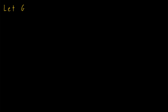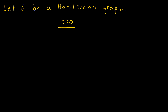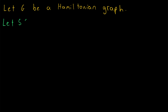Let's get to the proof. We begin by saying: let G be a Hamiltonian graph. We want to show that if we delete k vertices from G where k is greater than zero, the resulting graph will have at most k components. We specify k greater than zero because deleting no vertices leaves one connected component, and the result doesn't hold for k equals zero. Let S be a subset of the vertex set of G with S not equal to the empty set, and let the cardinality of S equal k, which is greater than zero.